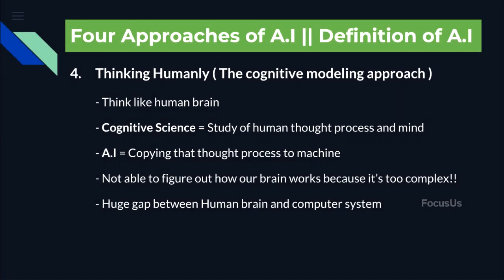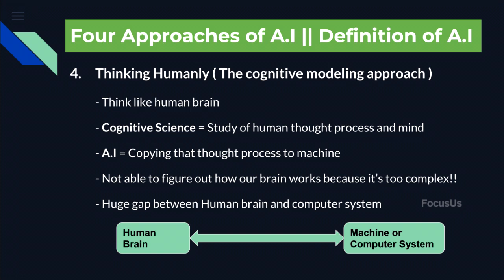Now we move to the fourth point: thinking humanly, also called the cognitive modeling approach. Here our machine should be able to think like a human brain. Cognitive science is the study of human thought processes and how human brains actually work — how the brain takes information from the surroundings as input, stores it, processes it, and gives output according to the situation. In AI, we try to copy that thought process studied in cognitive science into a machine. However, the answer to whether our machine can think like a human is still no, since we are not able to figure out how our brain actually works because it's too complicated, leaving a huge gap between the human brain and implementing it into a computer system.